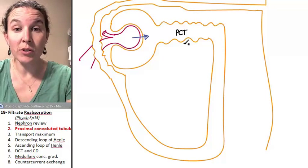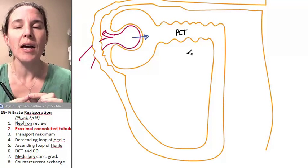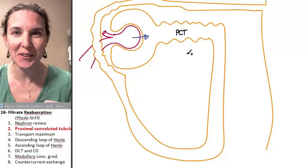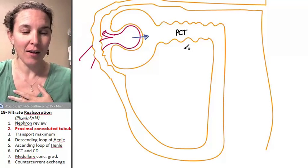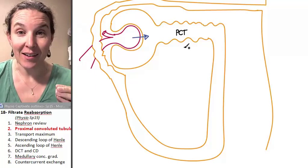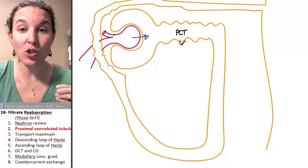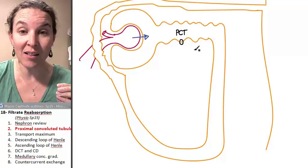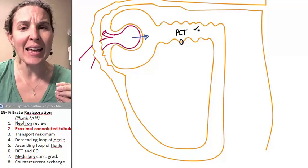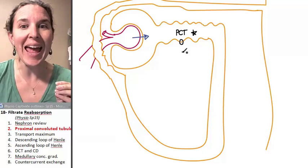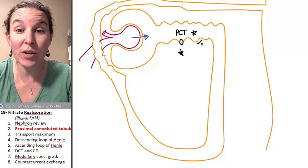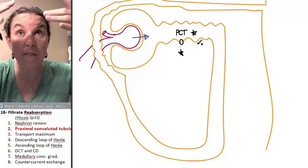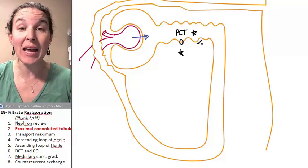We're going to start in the proximal convoluted tubule. It is absolutely critical that you understand that I'm going to draw you a picture of a cell that has a luminal edge and a basolateral edge, and that I'm going to have to bring stuff out of the filtrate and into the interstitial space.